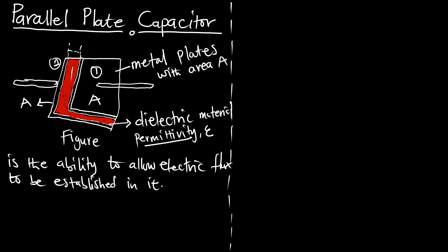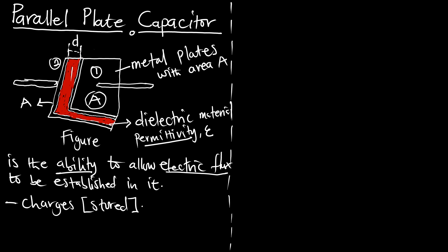Remember, we are talking about capacitors and their main function is to store charges. We also have the distance of the separation — the dielectric material — and we know the thickness of it, which we call D. We know the area of the plate as A and the separation between plate 1 and plate 2 as D. These are the physical dimensions that will help us in the construction of the capacitor.